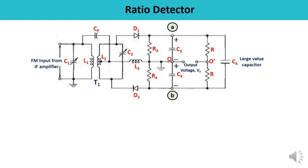In the ratio detector, there are three changes compared to the Foster-Seeley. First, the direction of diode D2 is reversed. In the Foster-Seeley, both diodes are connected in the same manner, but here the direction of D2 is reversed. Second, a large-value capacitor C5 is included in the circuit. Third, and very importantly, the output is taken at a different point compared to the Foster-Seeley discriminator. These are the three variations you must remember.